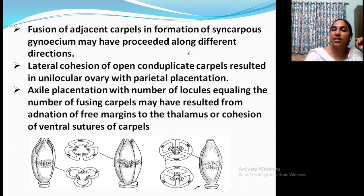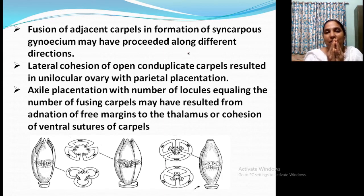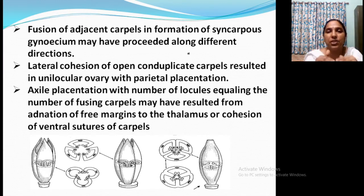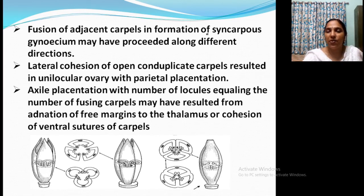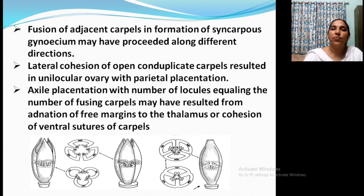We are discussing only a single carpel, but in the multi-carpellary condition, many carpels fuse together. Adjacent carpels fuse in different directions. Lateral cohesion of conduplicate carpels results in a unilocular ovary with parietal placentation. Adnation of the margins results in parietal placentation, and fusion of adjacent carpels results in syncarpous gynoecia. You can see the foliar carpel — the dashed line indicates fusion. Fusion takes place along the margins, and the degree of fusion results in different types of carpels. Placentation may vary based on the fusion of carpels.